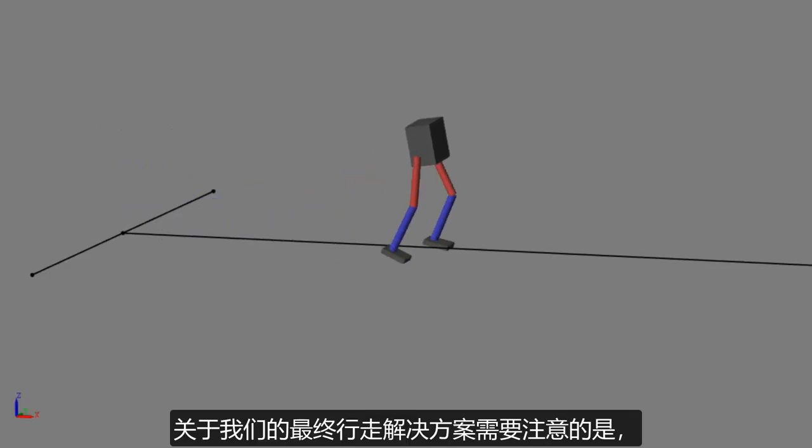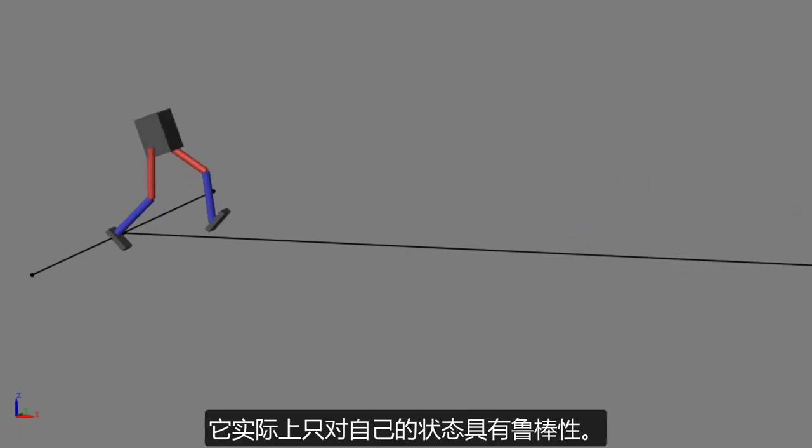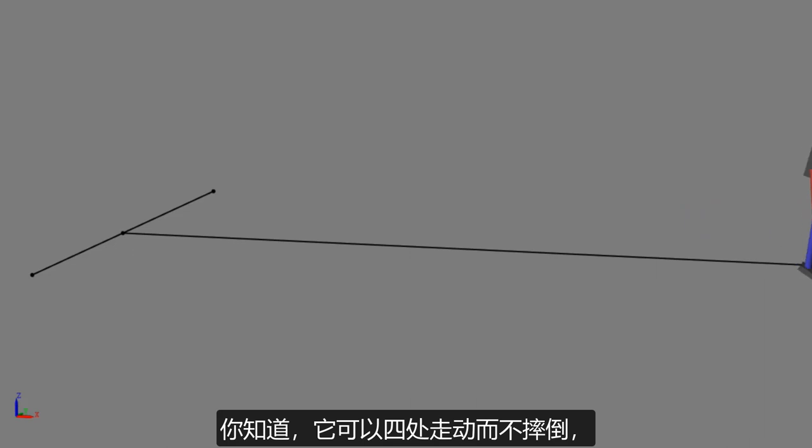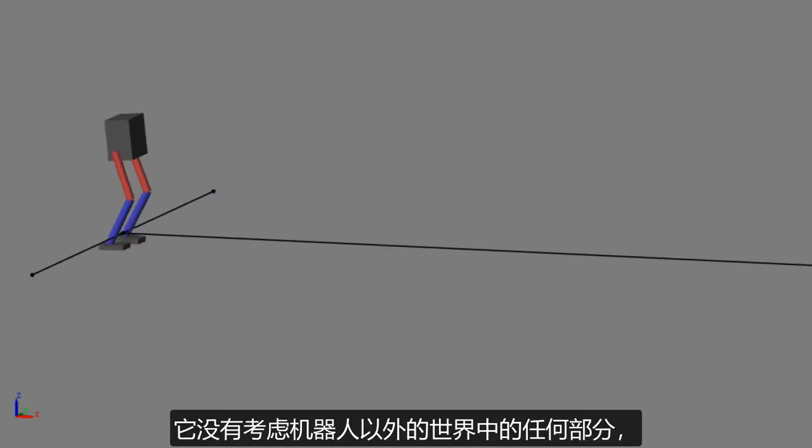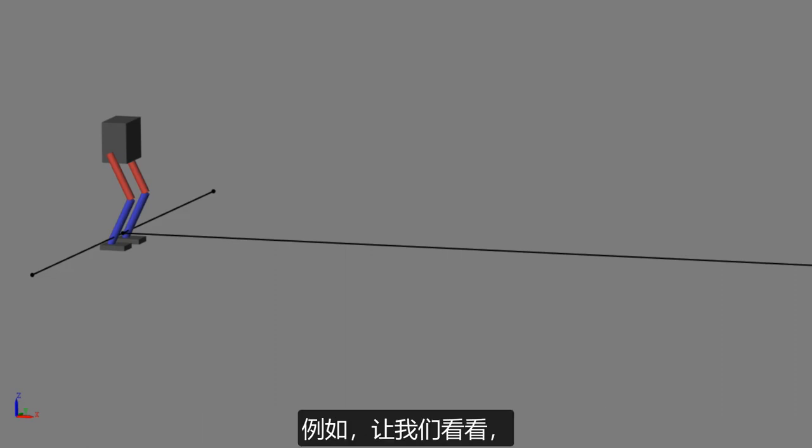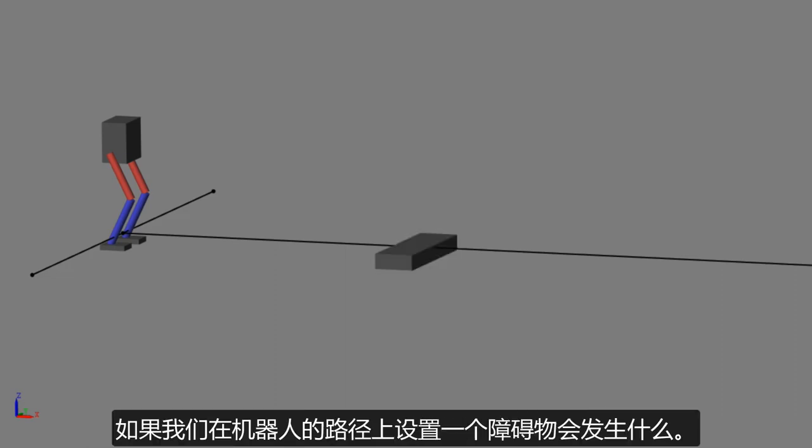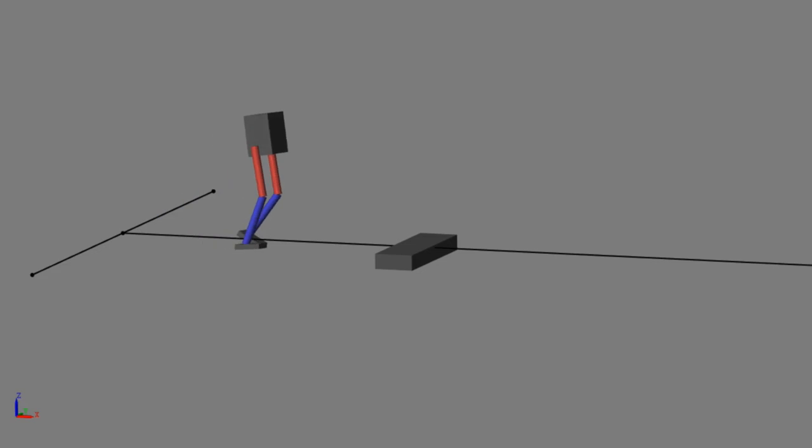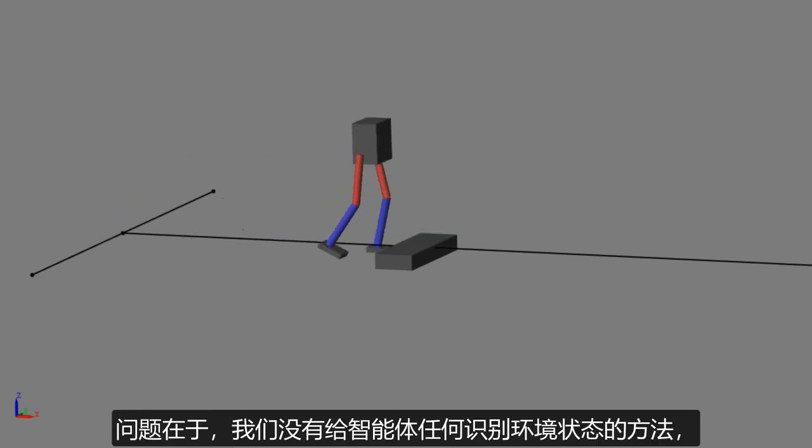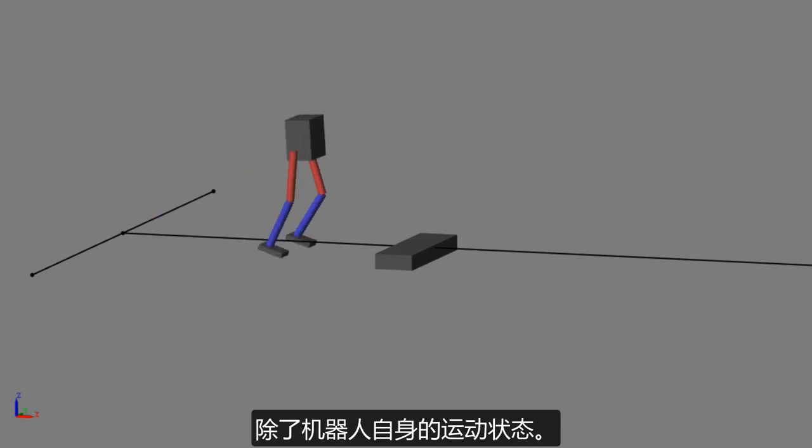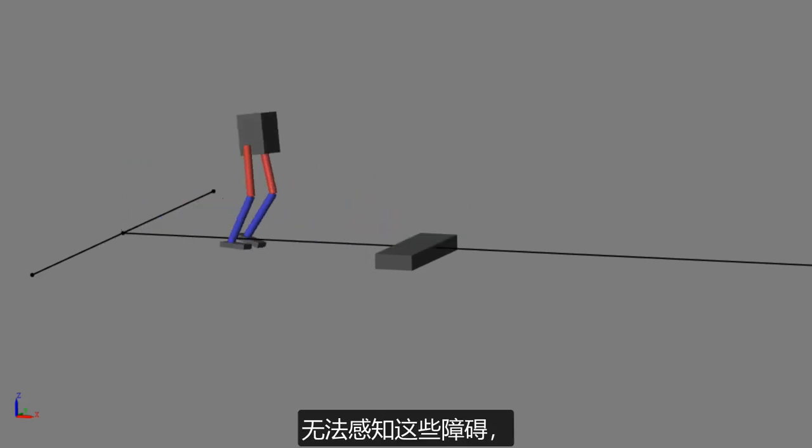Something to note about our final walking solution is that it's really only robust to its own state. You know, it can walk around without falling over, which is good, but only in a perfectly flat, featureless plane. It's not taking into account any part of the world outside of the robot, so it's actually quite a fragile design. For example, let's see what happens if we place a single obstacle in the way of our robot. Well, that went pretty much as expected. The problem here is that we didn't give our agent any way of recognizing the state of the environment beyond the motions of the robot itself. There's nothing that can sense the obstacles, and therefore nothing can be done to avoid them.